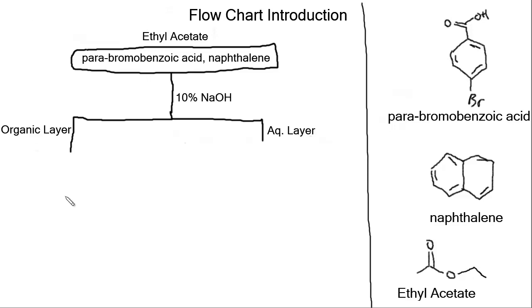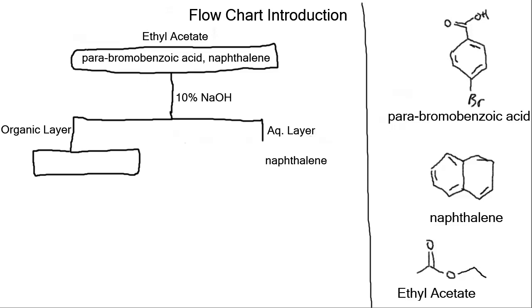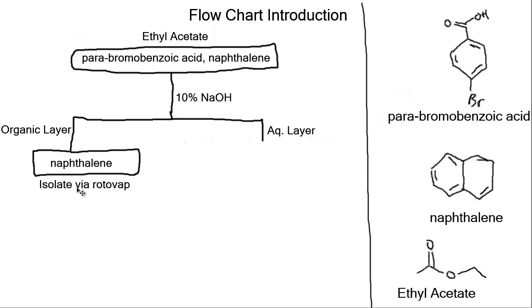The question is: what is in our organic layer? In the organic layer at this point we have the compound that is still soluble in the organic layer. Naphthalene did not interact with sodium hydroxide — we did not make naphthalene water soluble. It's still in our ethyl acetate, which is the organic layer. To isolate our naphthalene, we could put this on a rotavap, which would evaporate or distill all the organic solvent ethyl acetate and leave our naphthalene behind.